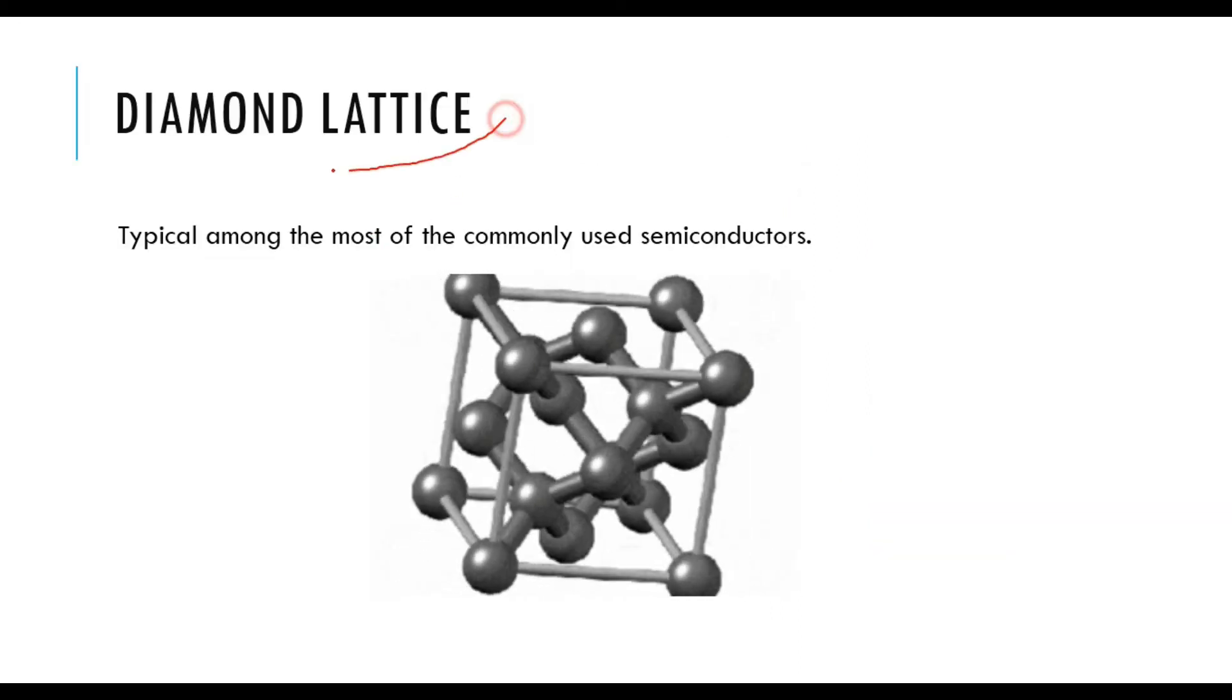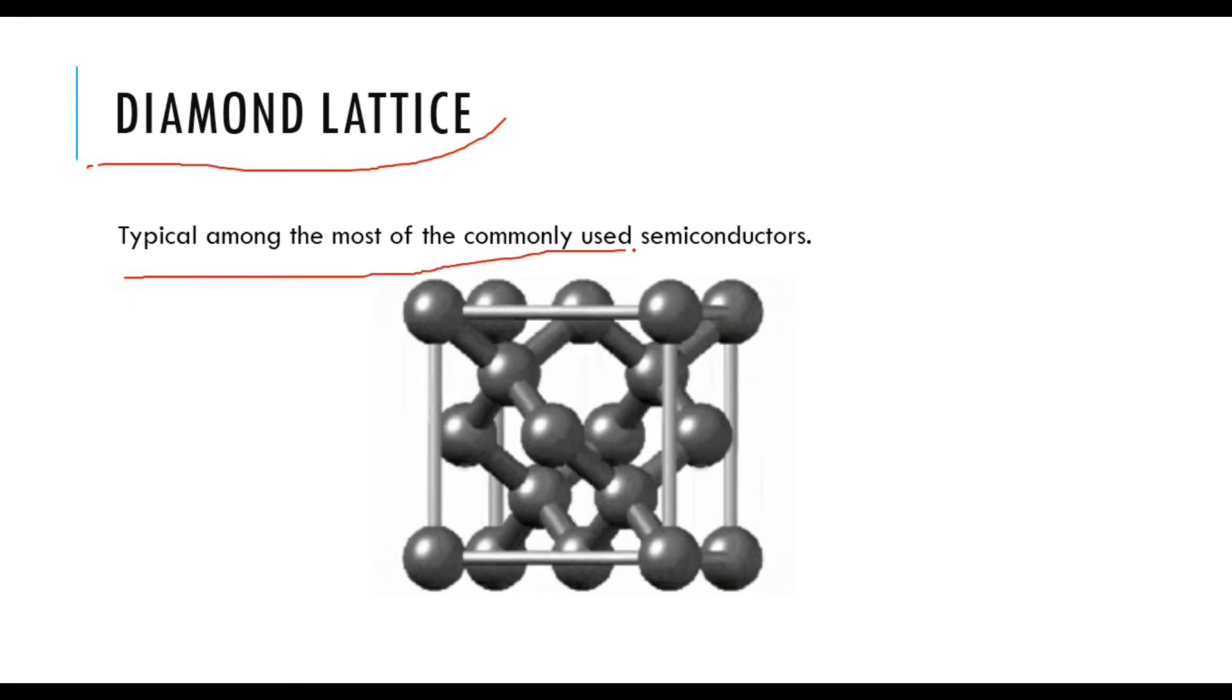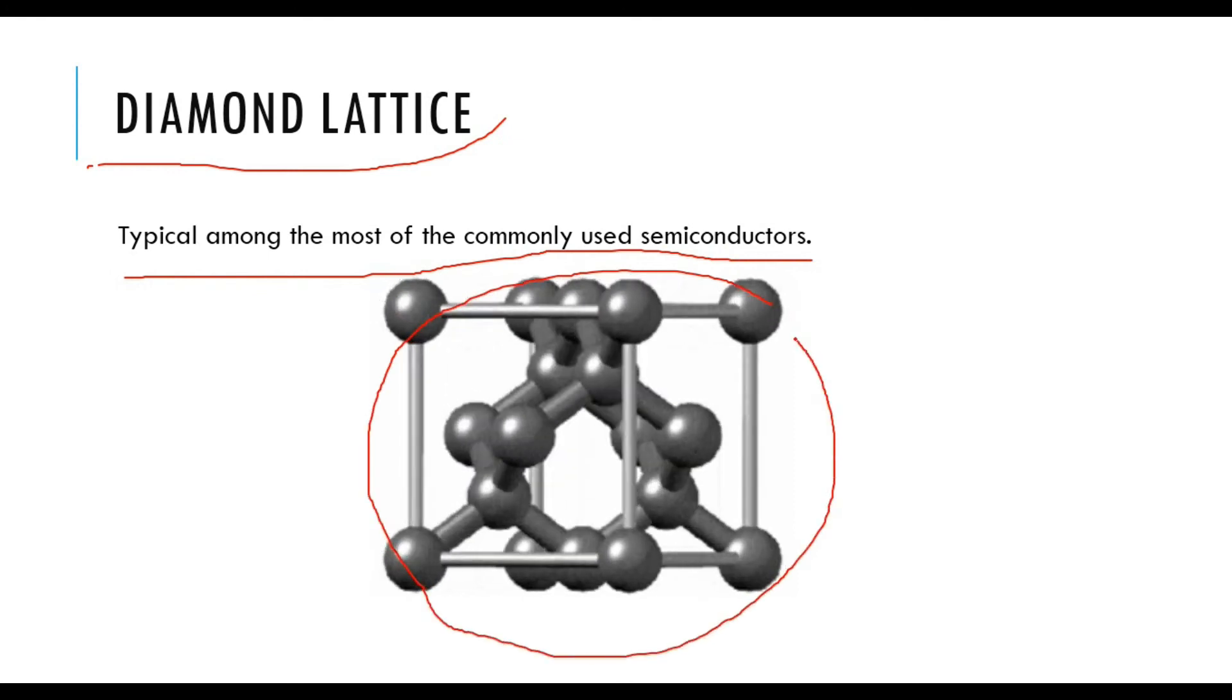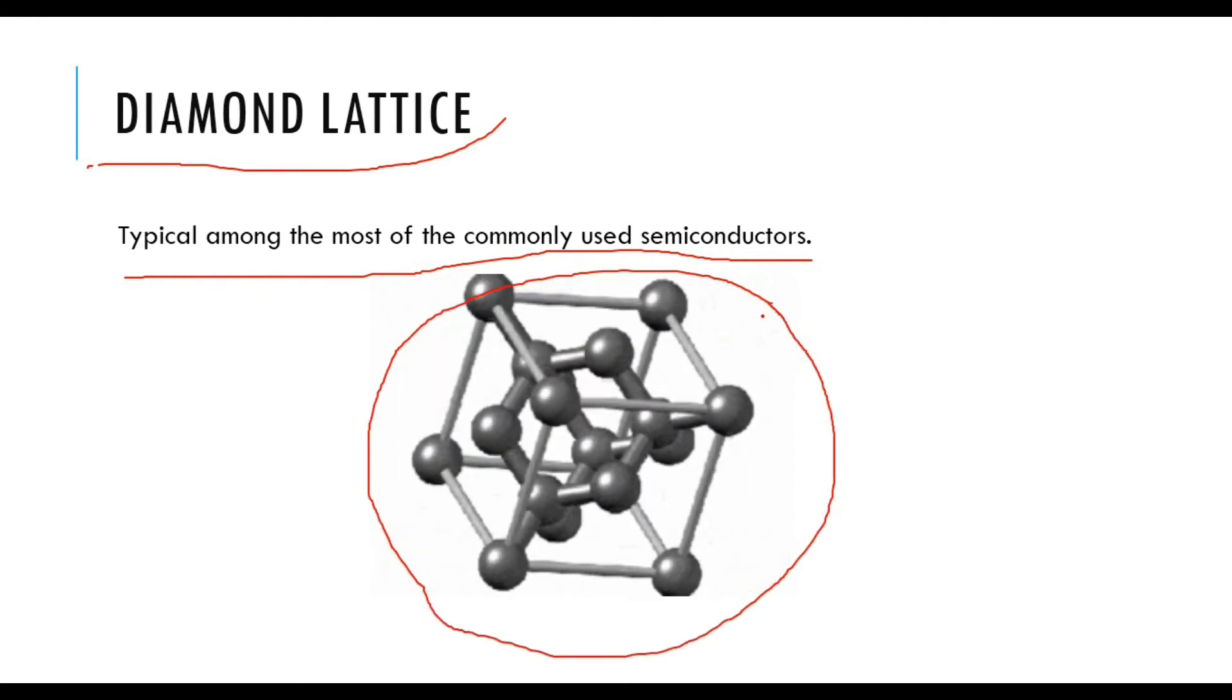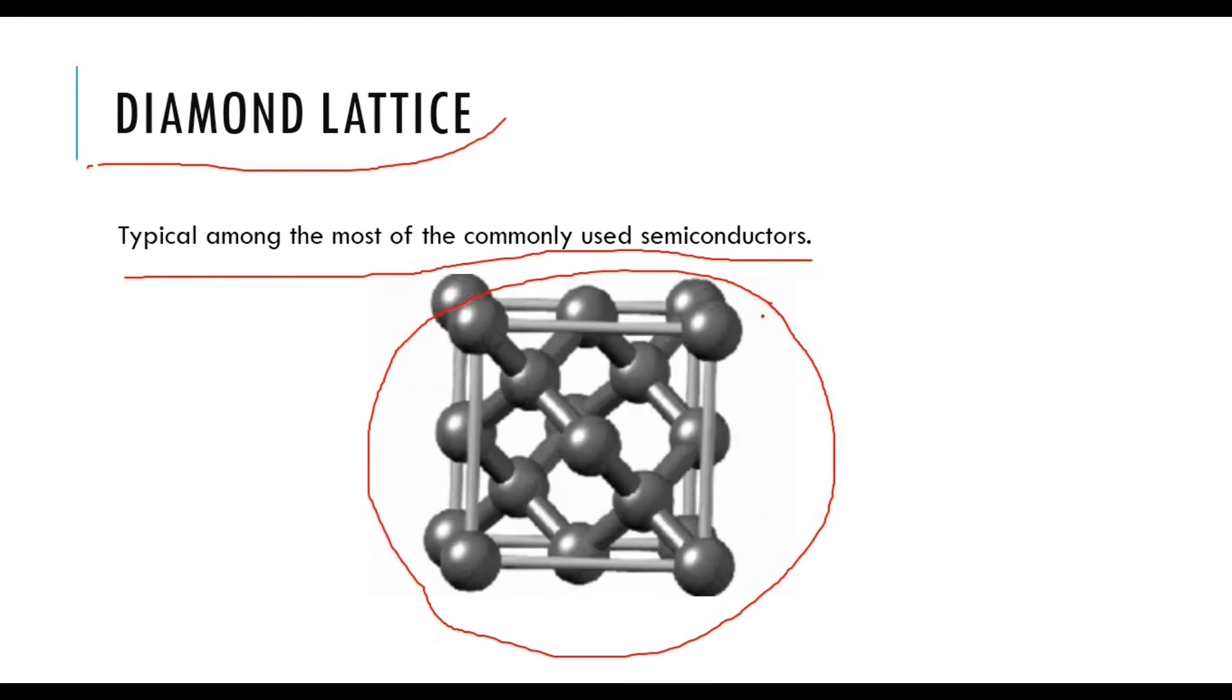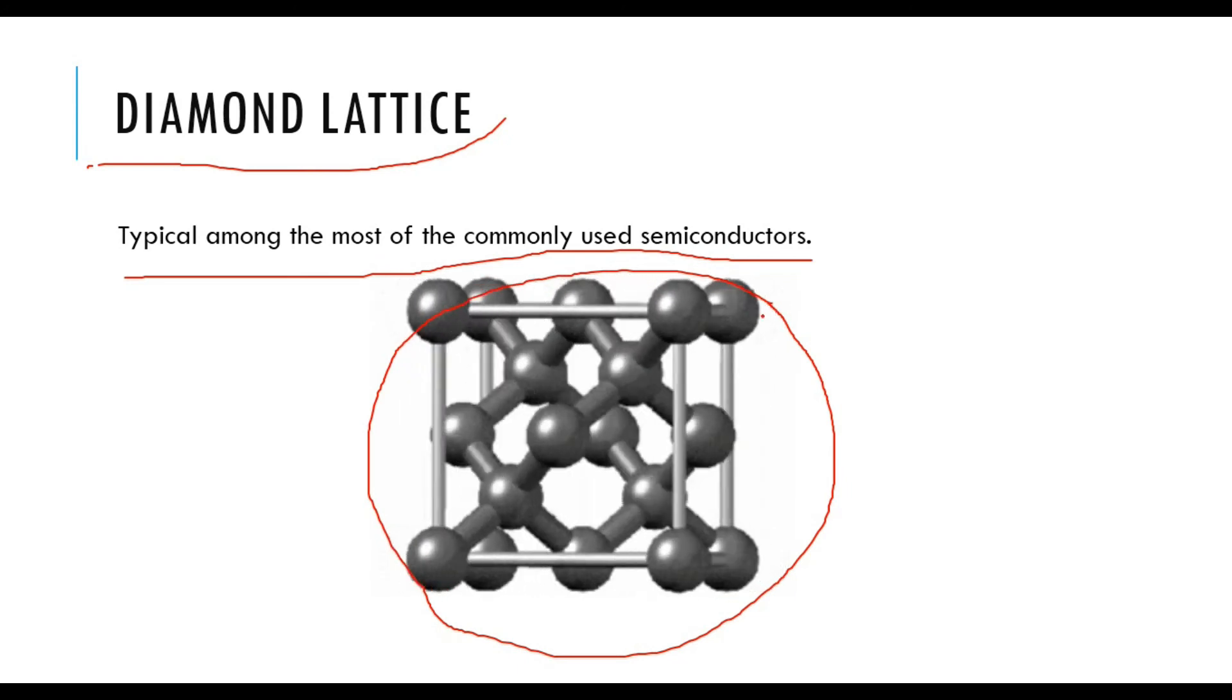Lastly, we're going to study the diamond lattice. It is one of the most typical structures used in semiconductors. Here you can see the structure of diamond lattice, but as I told you, if you want to study more about lattices you should refer to material science courses, whereas the knowledge we acquired from this video is enough to move ahead with our semiconductor course.